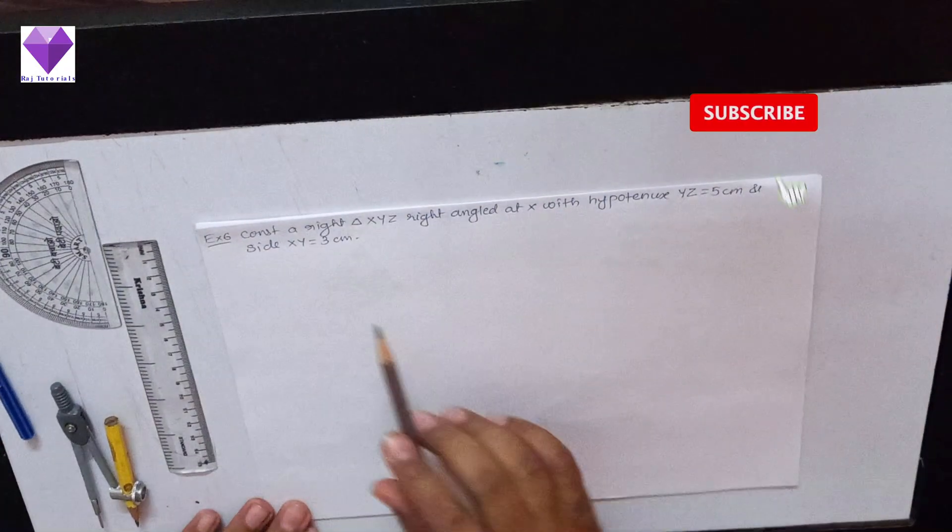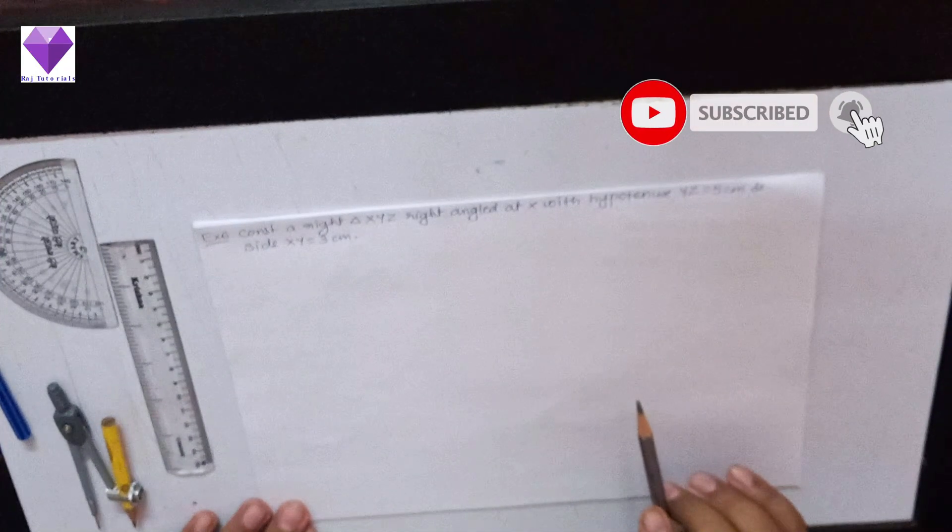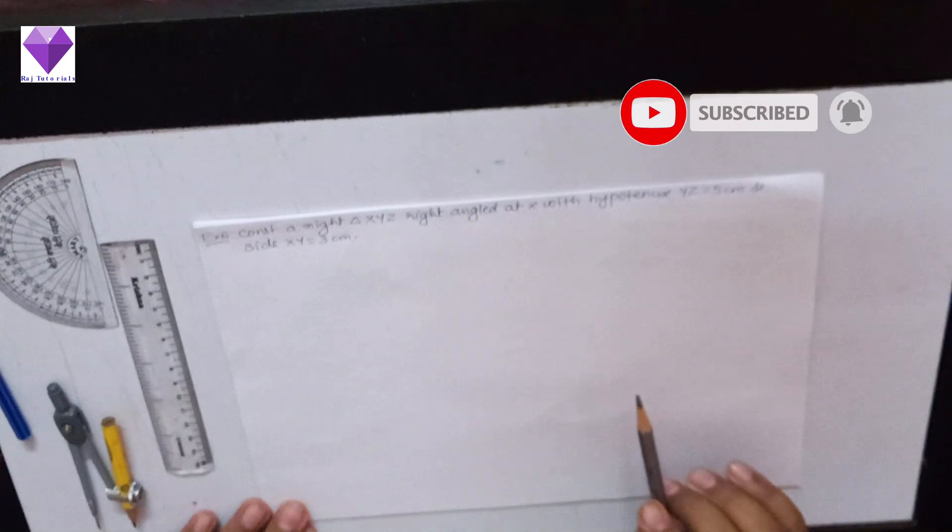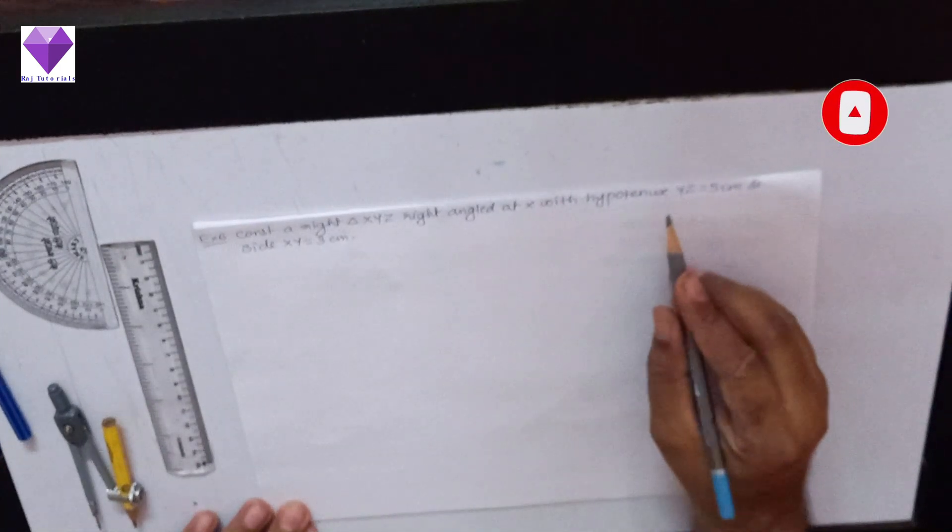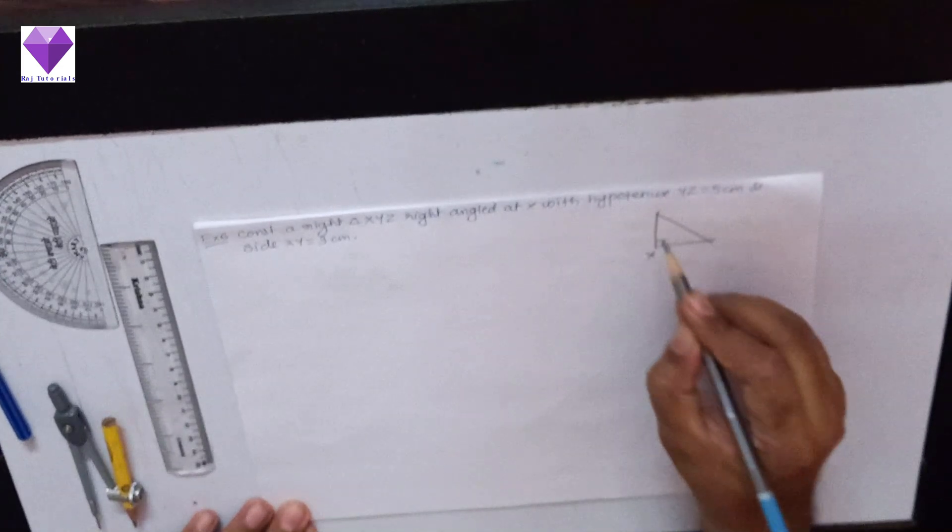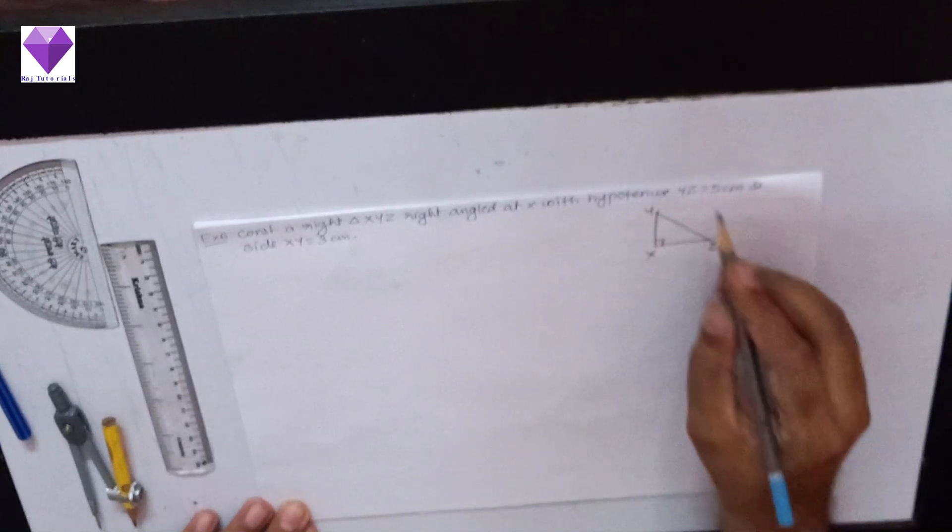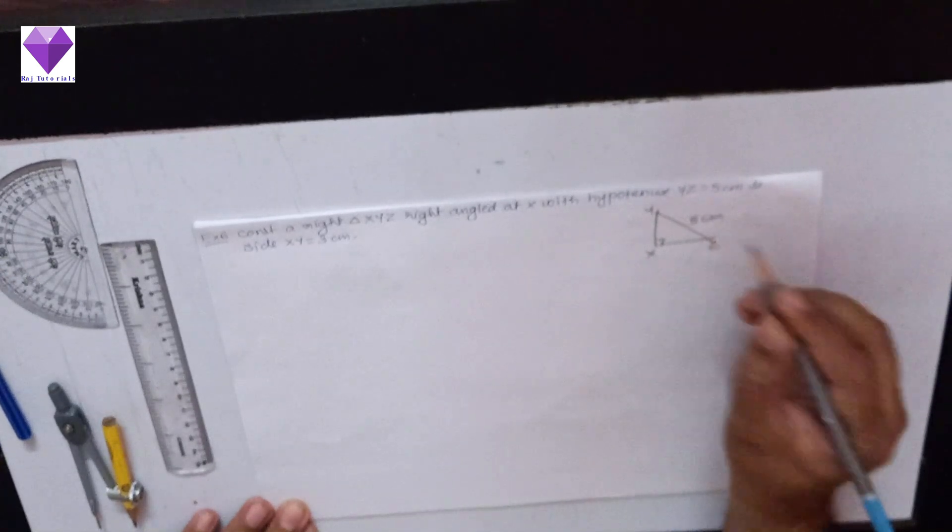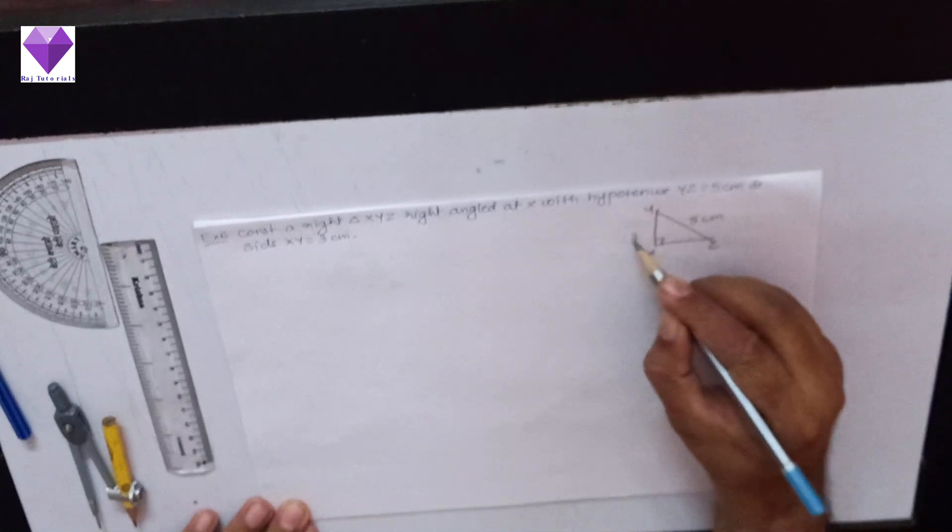Now we are going to construct a right triangle XYZ right angle at X with hypotenuse YZ equal to 5 cm. So drawing a rough sketch of that and XY is 3 cm.